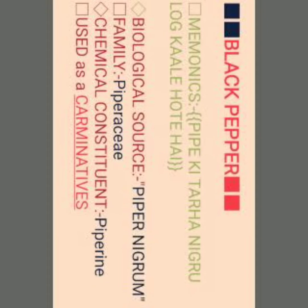First is black pepper. Black pepper is a seed. Mnemonic: pipe की तरह nigru लोग काले होते हैं. Biological source: Piper nigrum — 'pipe' and 'nigru' से. Family is Piperaceae. Chemical constituent is piperine. Used as a carminative. इसको हम P3 करके भी याद रख सकते हैं.